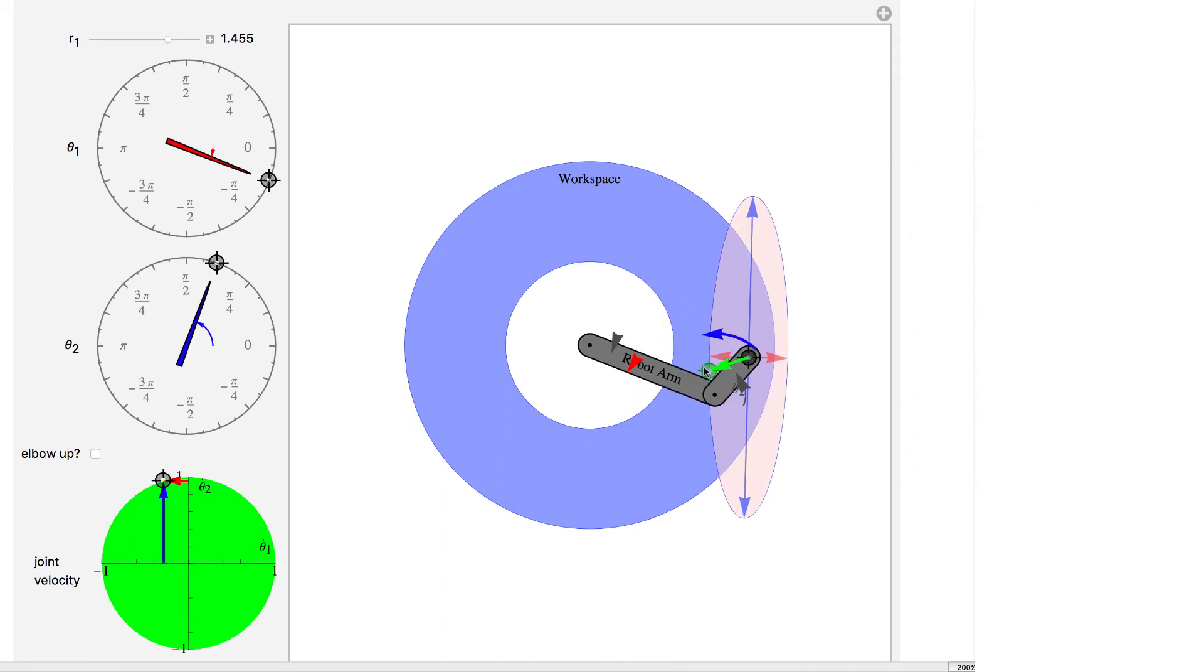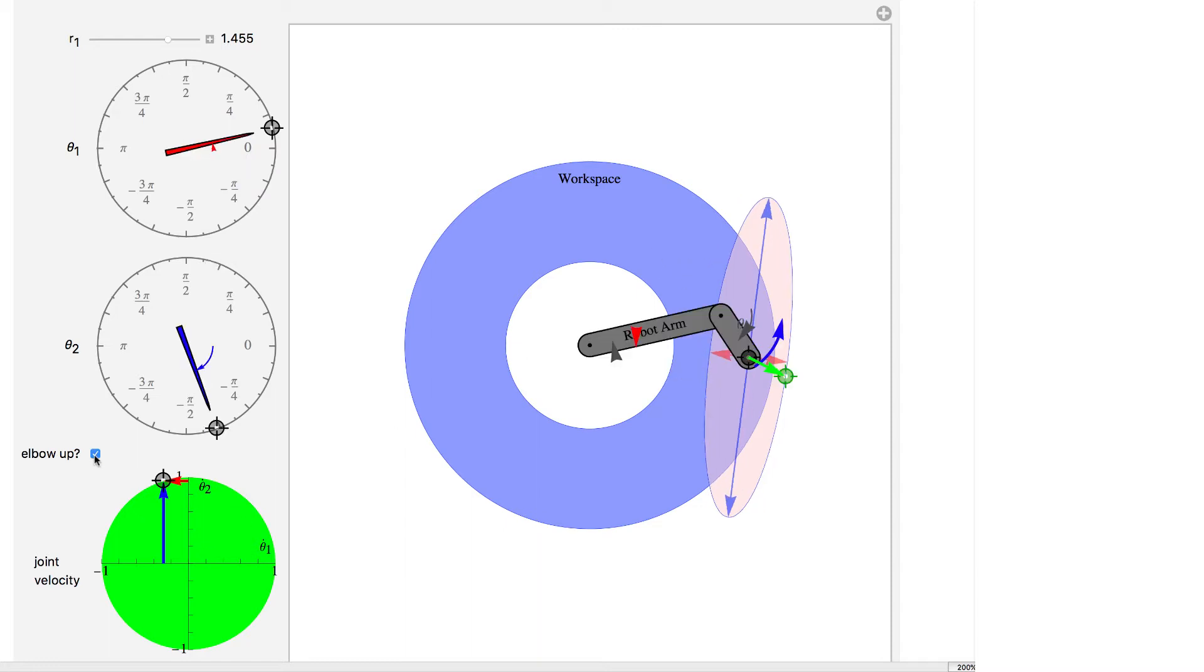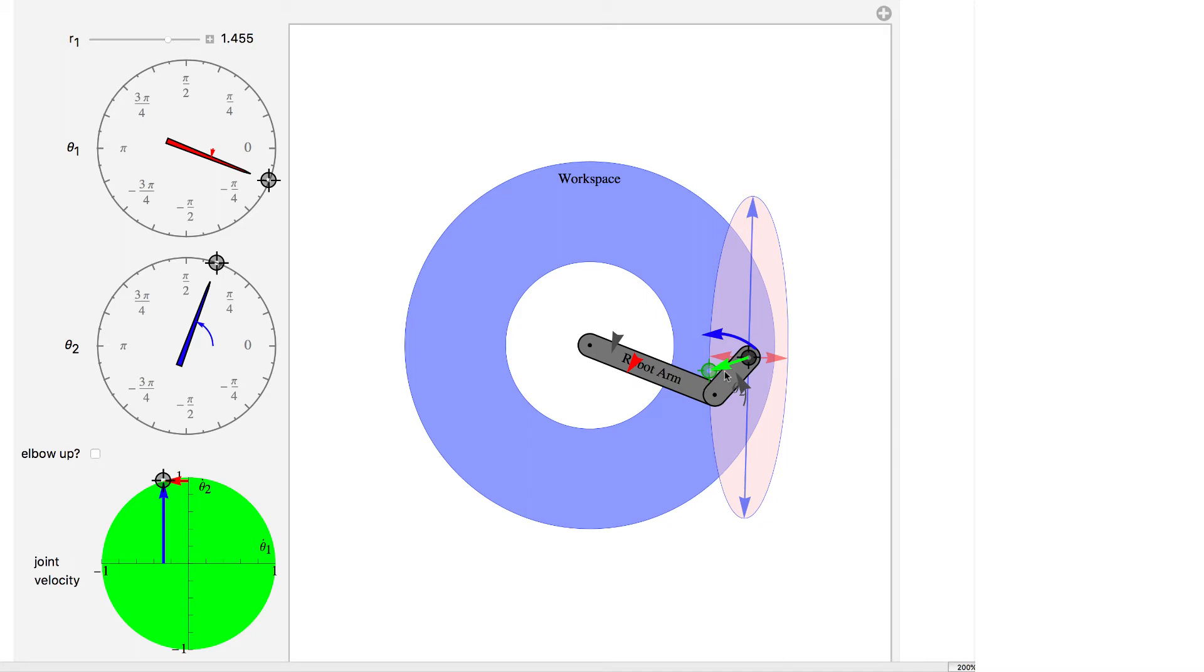However, there's something interesting about a two-linked robot and that is that there's always two solutions in the interior of this workspace. There's the elbow up, see how that elbow is cocked upwards, or the elbow can be down. So those are the two solutions. The only places where you don't have two solutions are on the edge of this reachable workspace. And again, that's because these are singular positions.